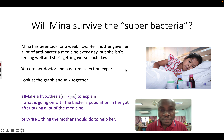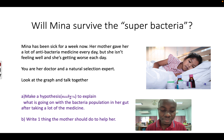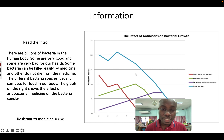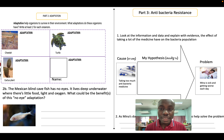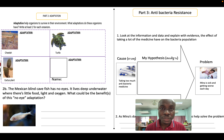We talked about this story — the story about Mina. She is sick. She's been taking a lot of antibacterial medicine, but she's getting worse each day. I asked you to explain using the data what is going on with the bacterial population in her body, and you were supposed to write your answer on your worksheet. This video is going to help you to understand what is going on.